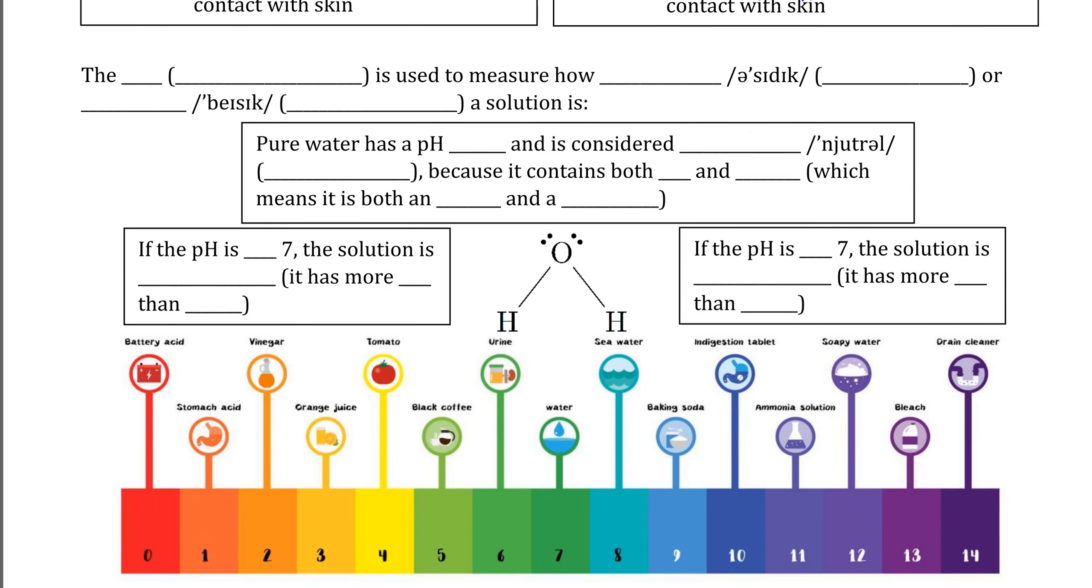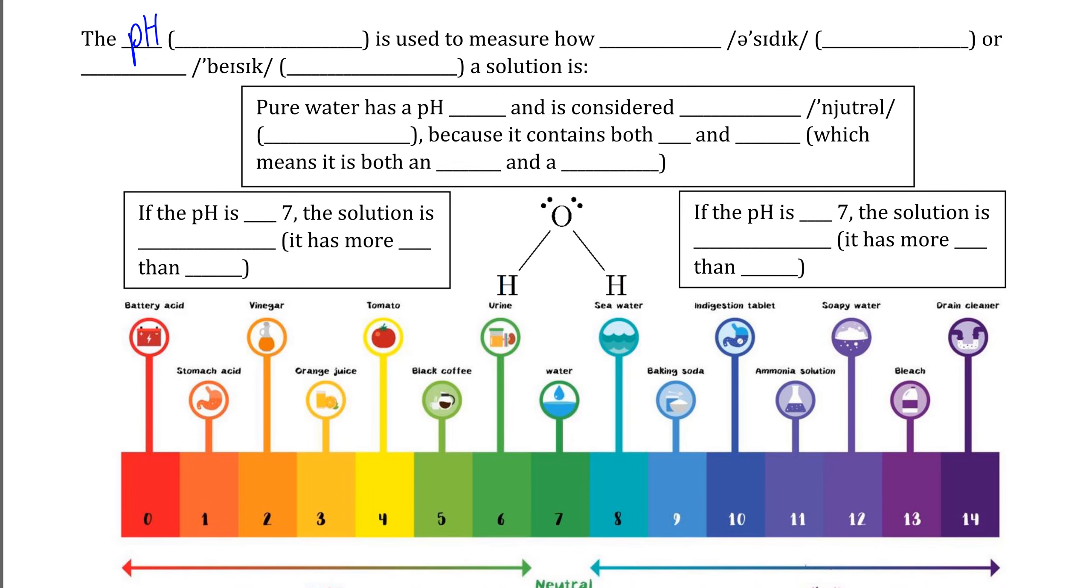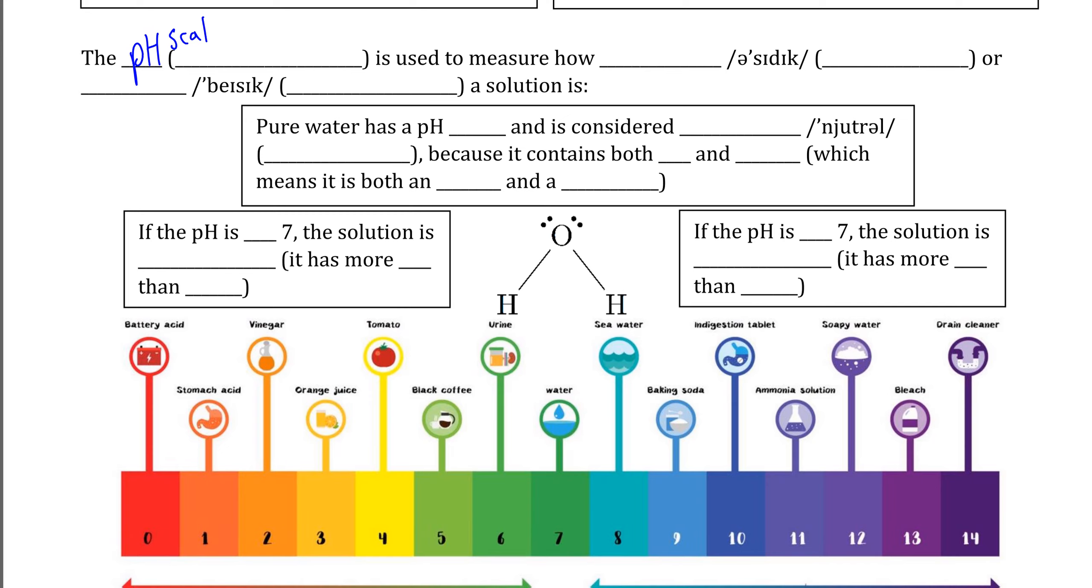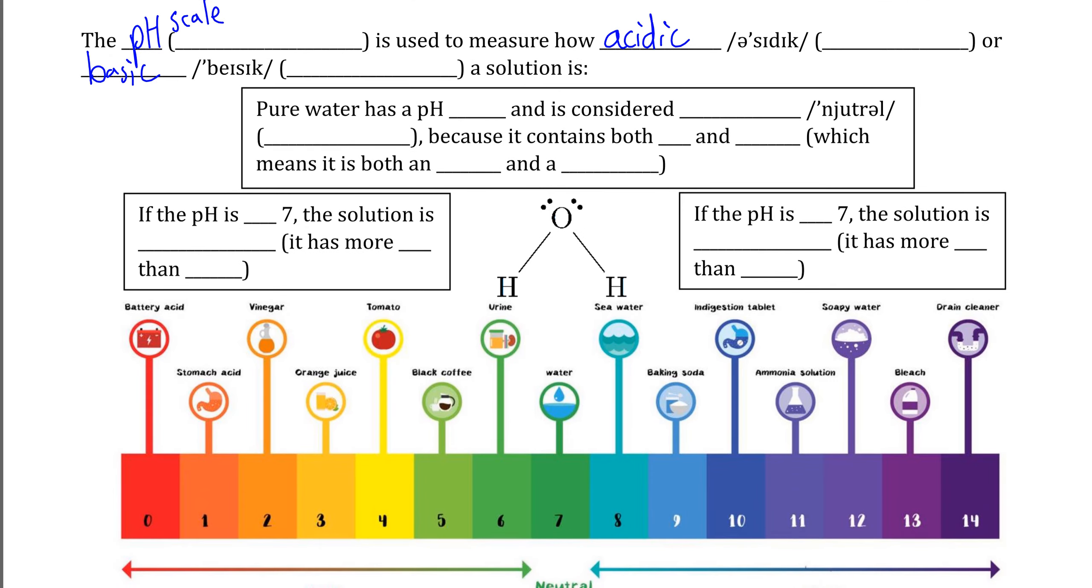We can measure how dangerous or how safe an acid or base is by using something that we call the pH scale. The pH scale is a measurement that allows us to measure how acidic acids are, meaning how likely an acid is to burn us, or how basic a base is, which measures how strongly a base is able to react. The pH scale works on a 14-point scale where 0 is the bottom of the scale and 14 is the top.